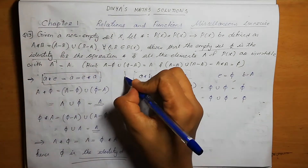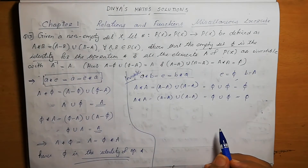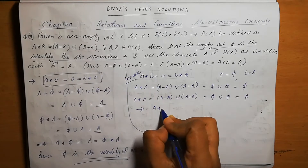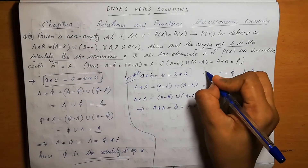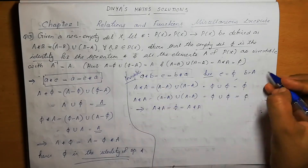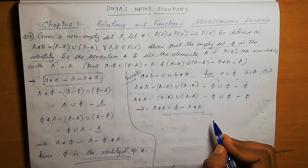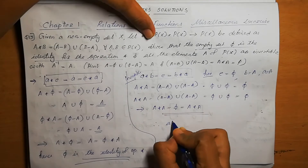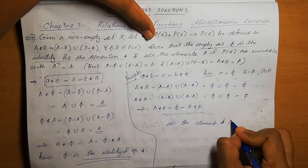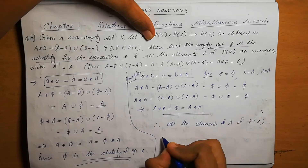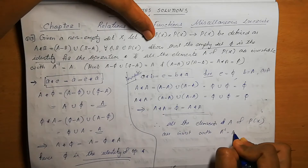We have shown that A star A equals φ equals A star A. This condition for invertibility is satisfied, where E equals φ and B equals A. Therefore, all elements A of P(X) are invertible with A inverse equal to A.